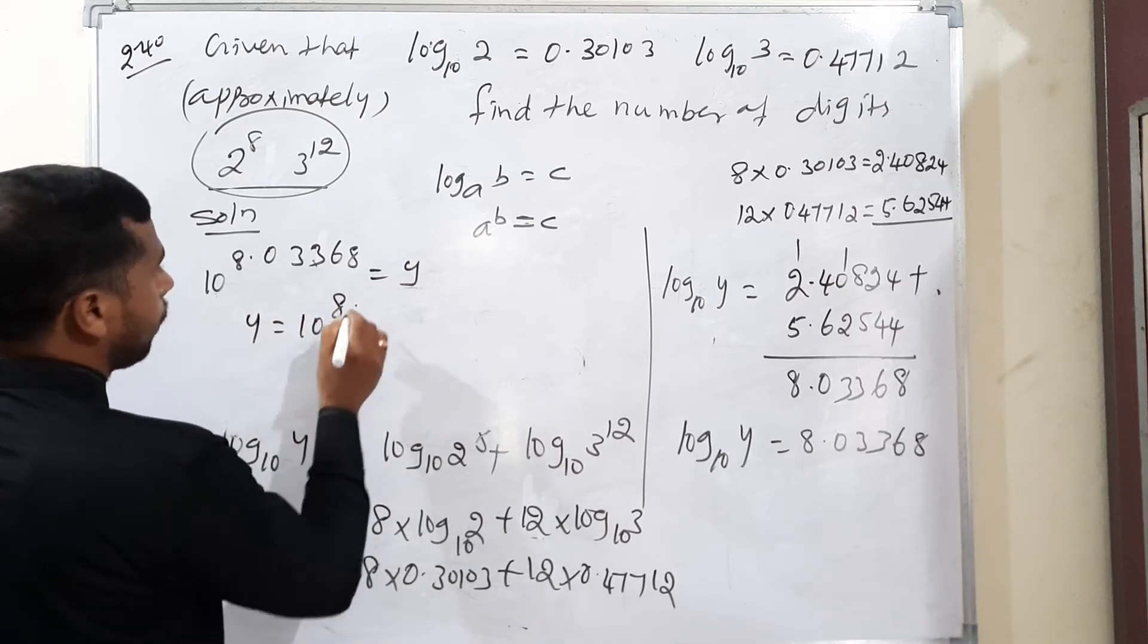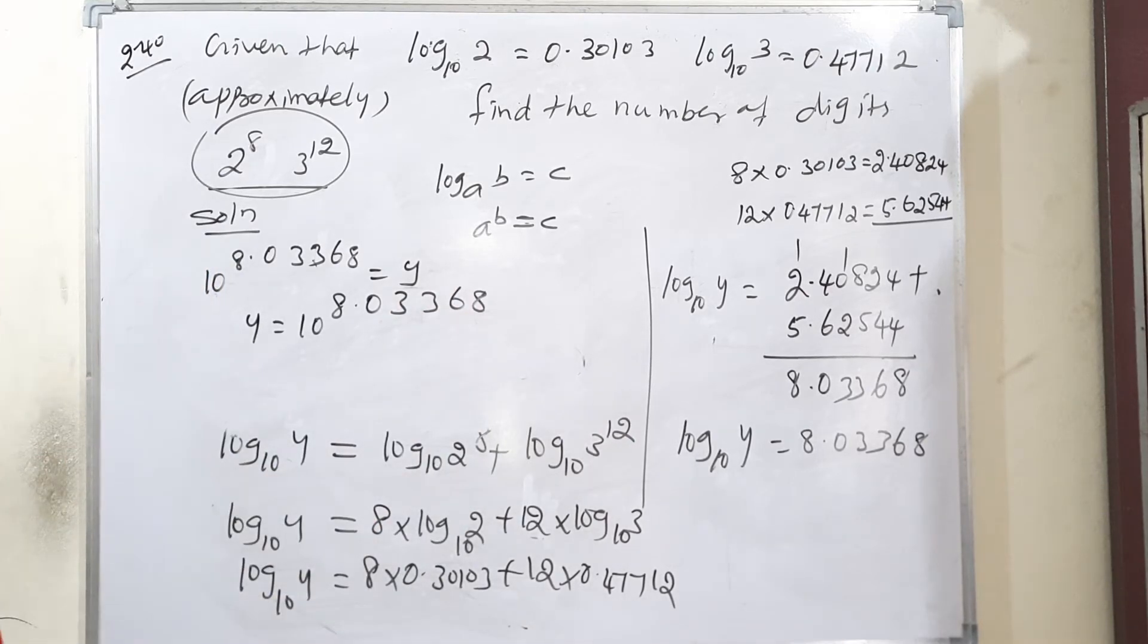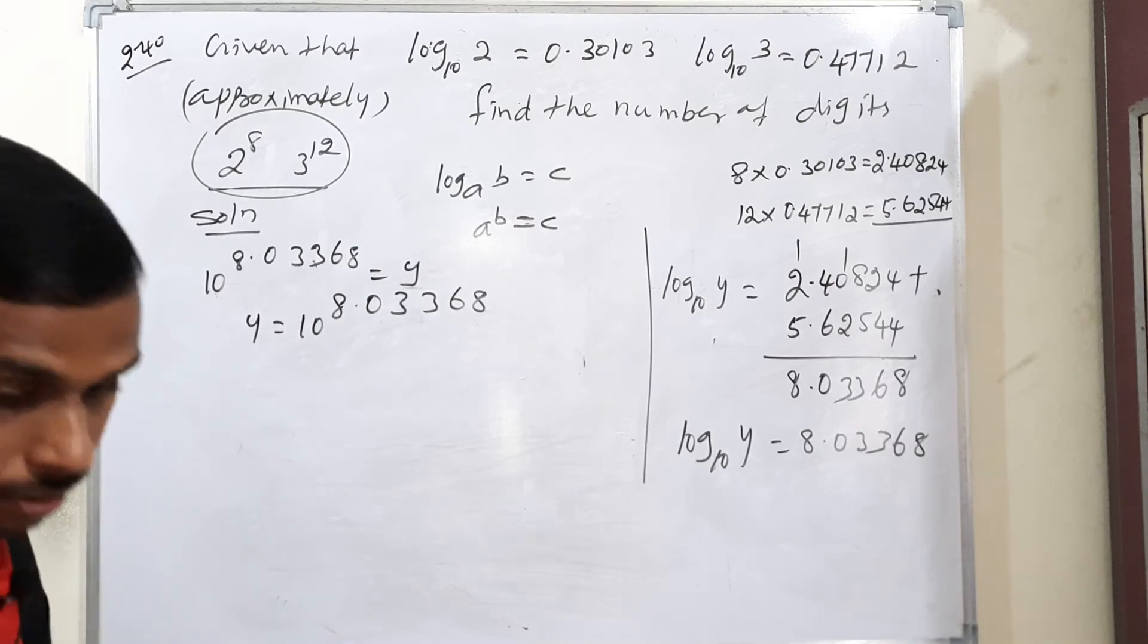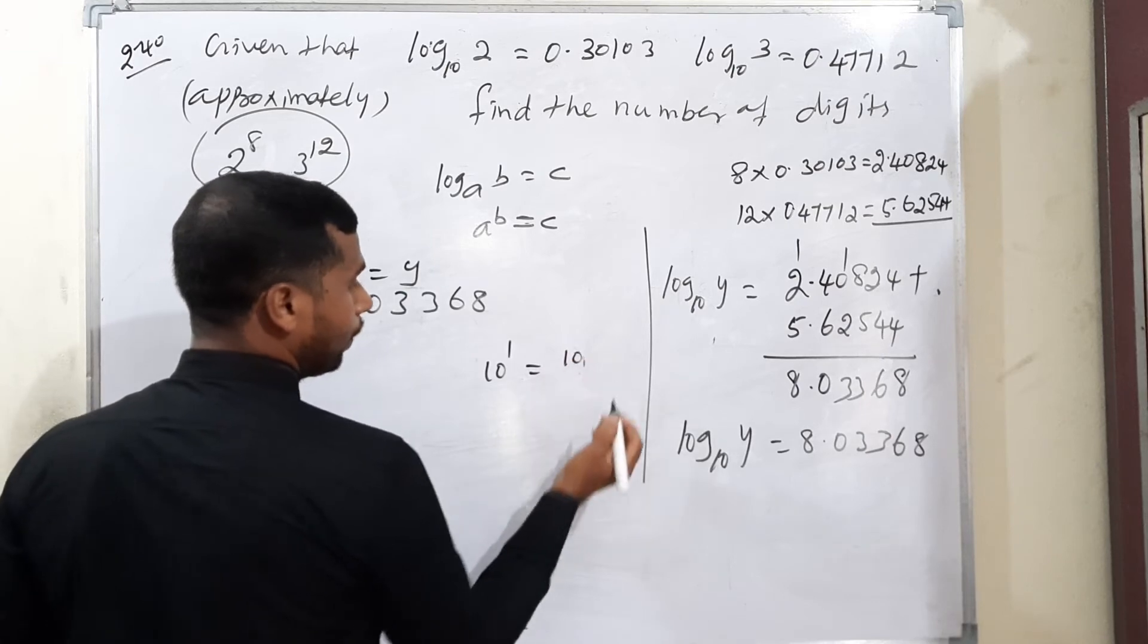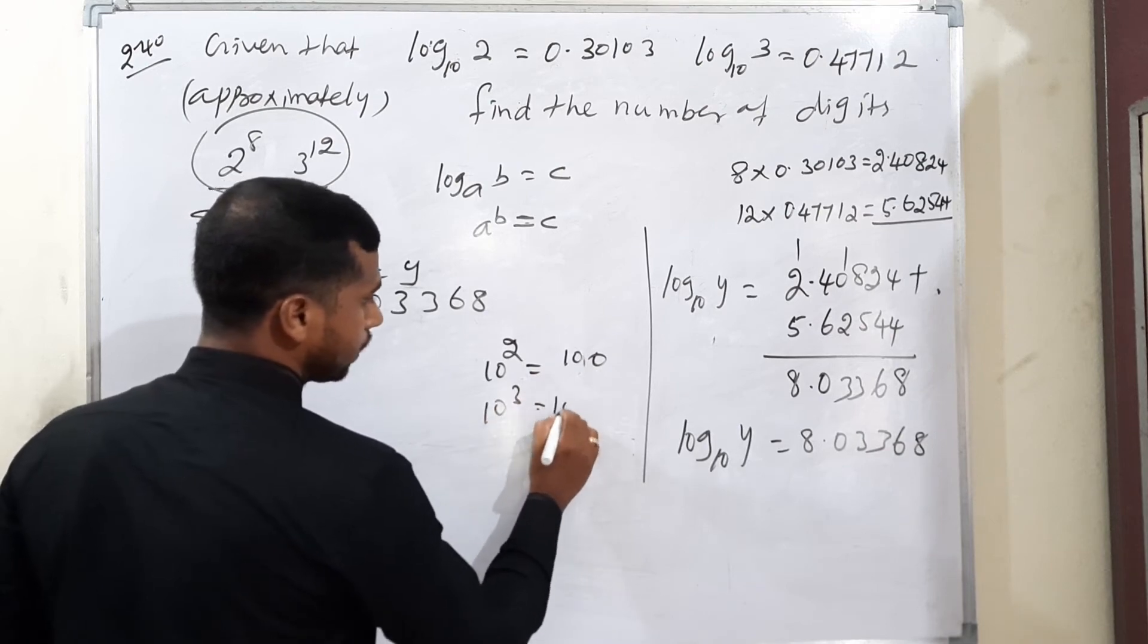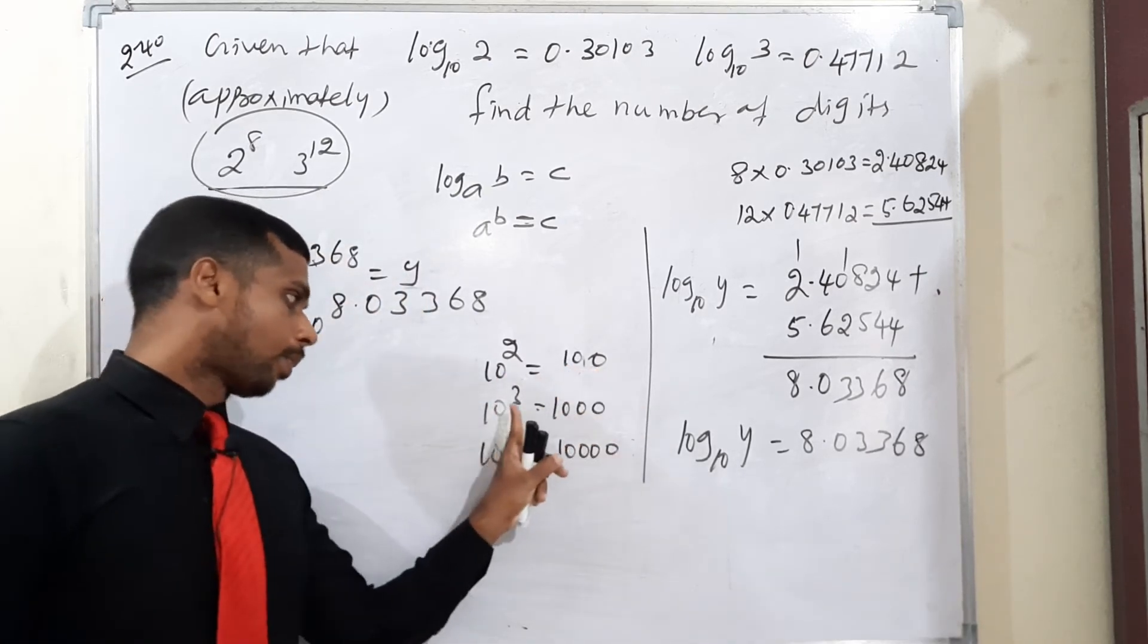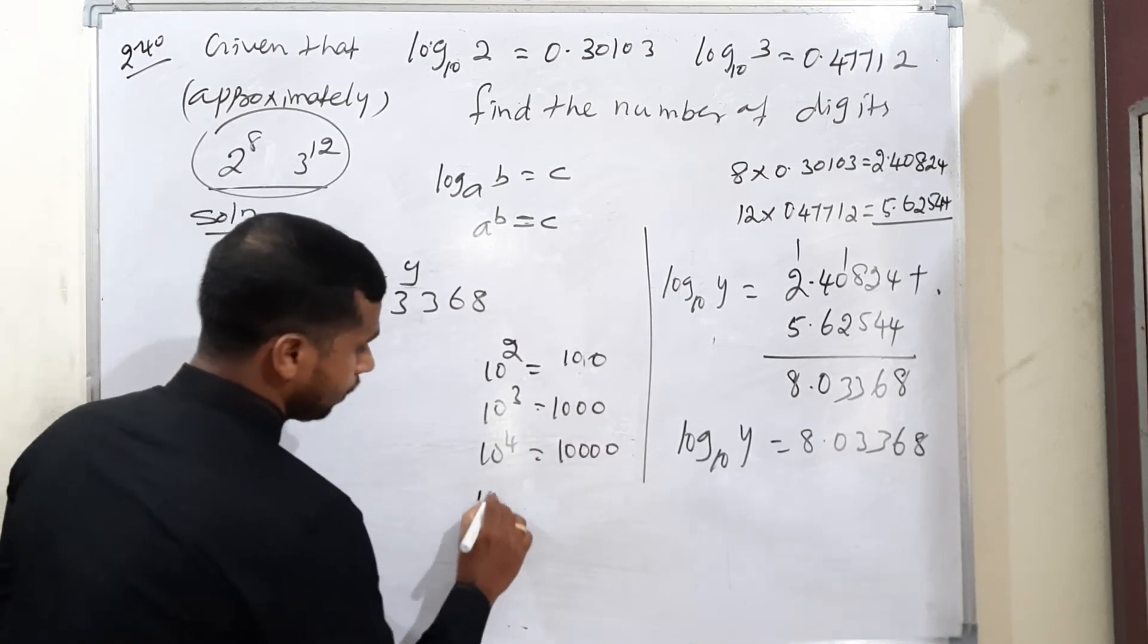Therefore y equals 10 to the power 8.03368, which means the number of digits will be 9 digits. For example, 10 to the power 1 means 10, 10 to the power 2 means 100, 10 to the power 3 means 1000, 10 to the power 4 means 10,000. Power 2 means 3 digits, power 3 means 4 digits, power 4 means 5 digits, so 10 to the power 8 means 9 digits.